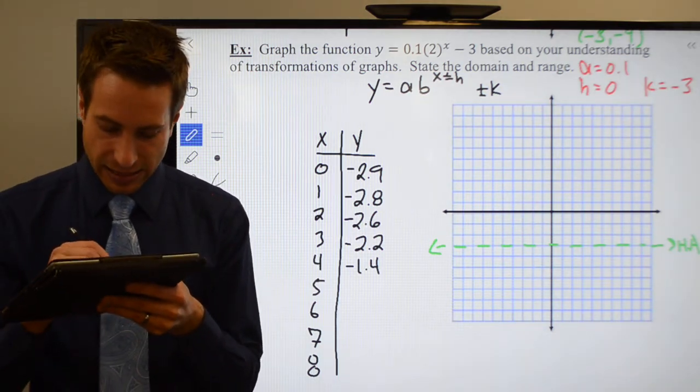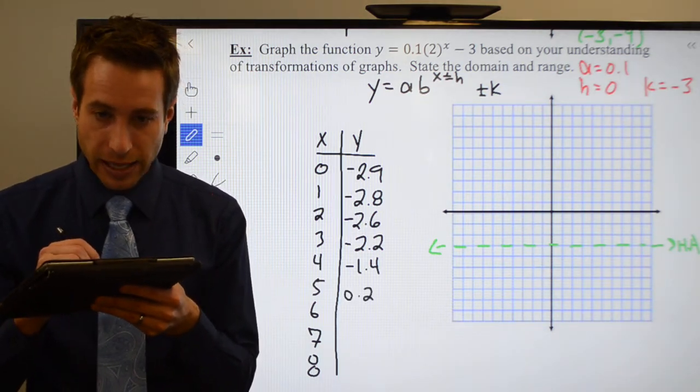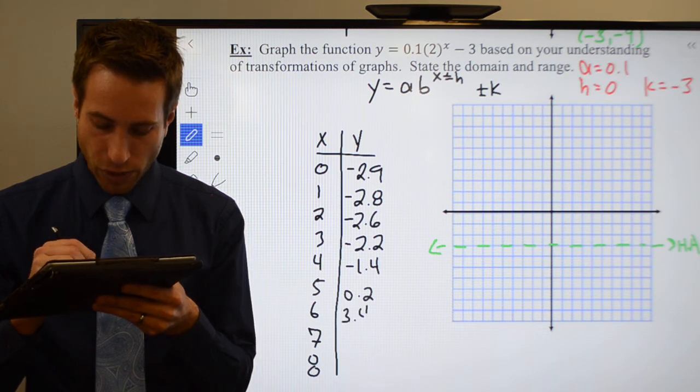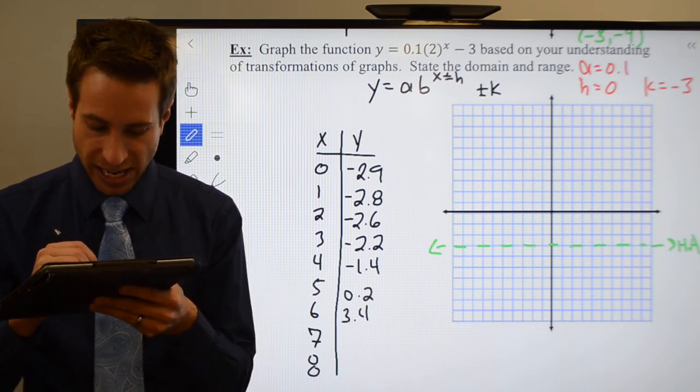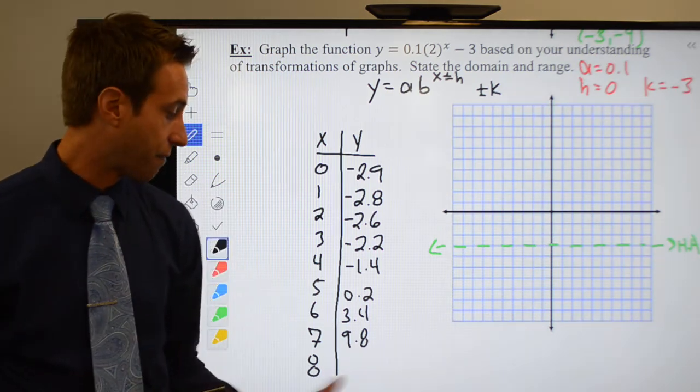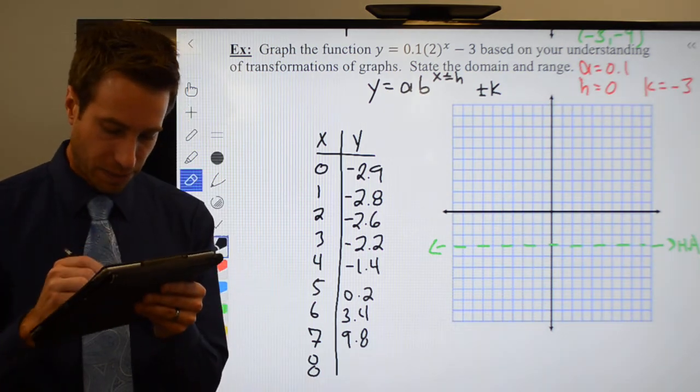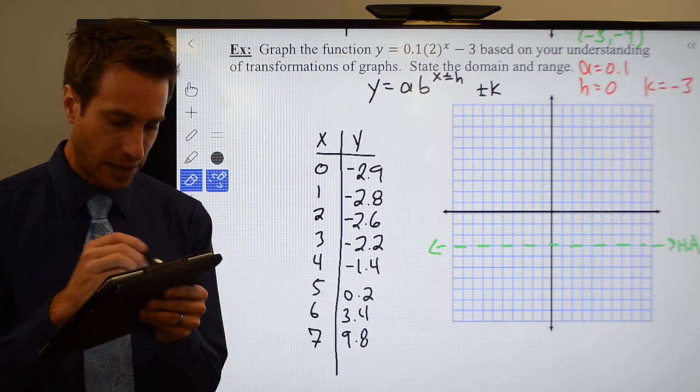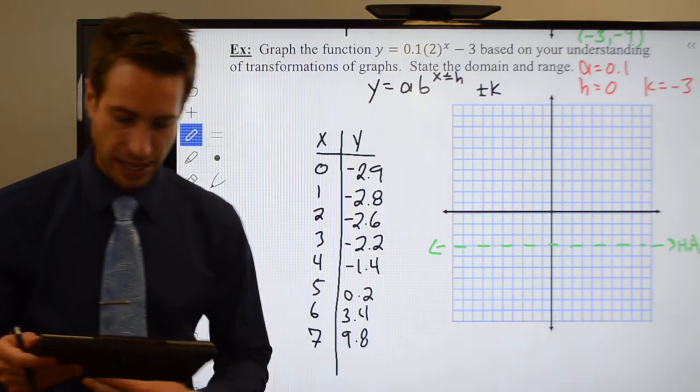Plug in a 5, I get 0.2. Plug in a 6, I get 3.4. There we go. Those are a little bit bigger jumps. 7 is going to be 9.8. That's about as big as it's going to fit. So we'll stop there. That's as big as I can fit on my graph. Let's go ahead and graph some of these guys.